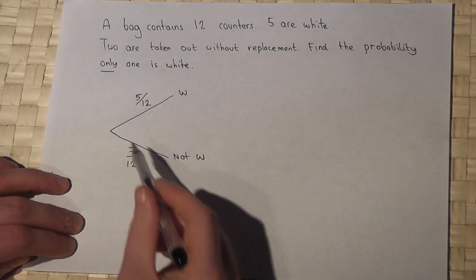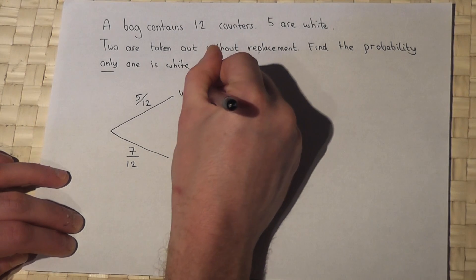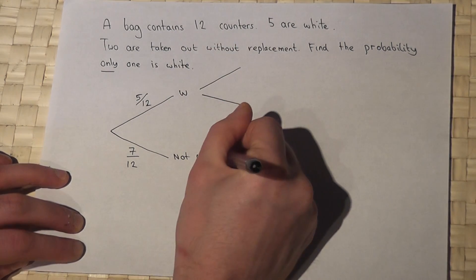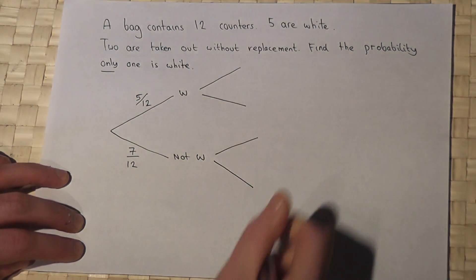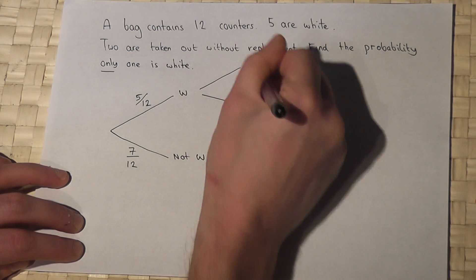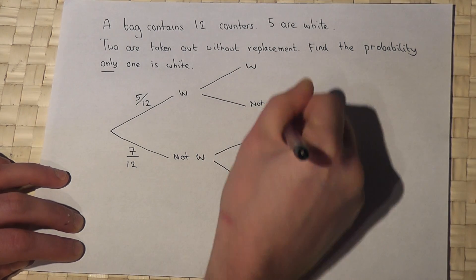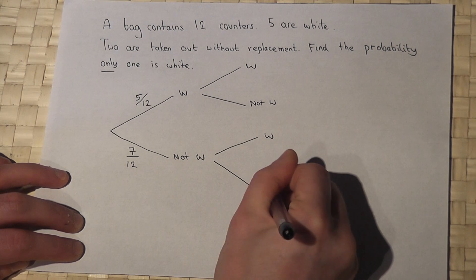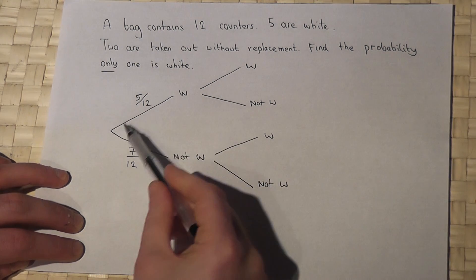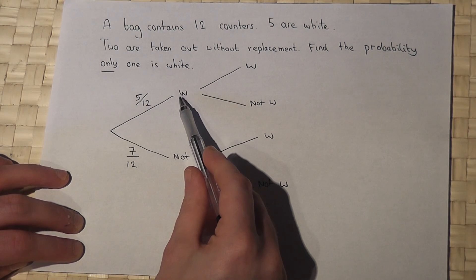That's the first counter, two options. Then you go get a second counter out of the bag. So white, not white, white, not white. Option one: if you got a white counter out of the bag and didn't replace it...